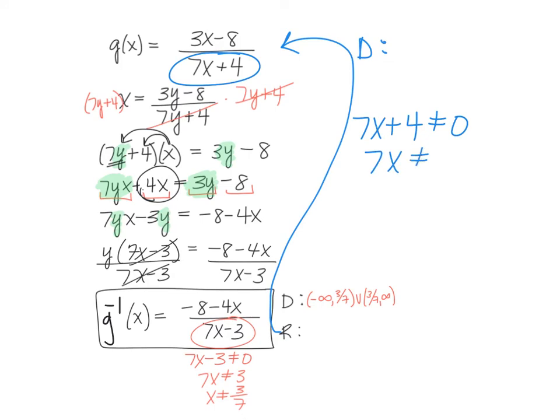So 7x cannot equal negative 4, therefore x cannot equal negative 4 sevenths. So my domain is going to be negative infinity to negative 4 sevenths, union negative 4 sevenths to infinity, and that will be then the range of my inverse.